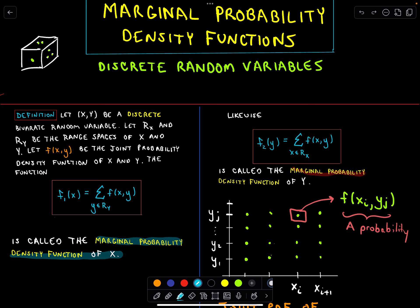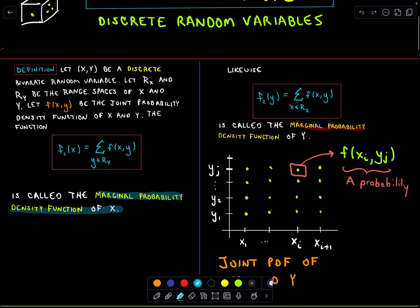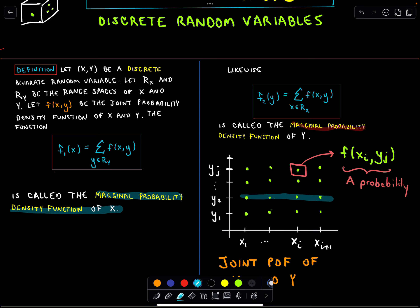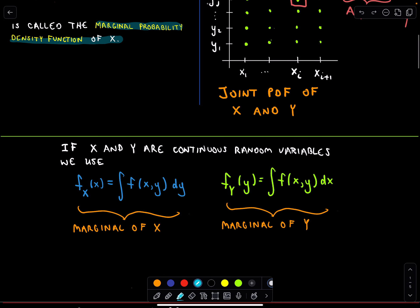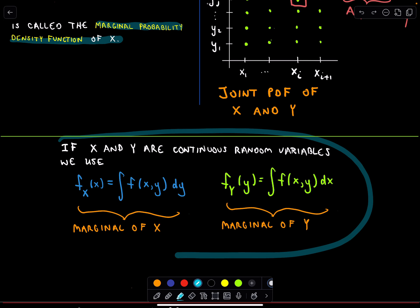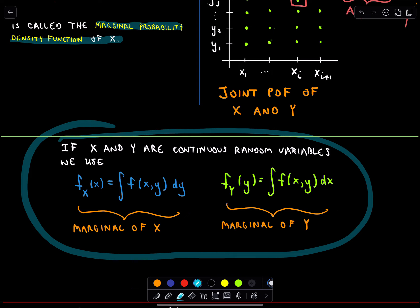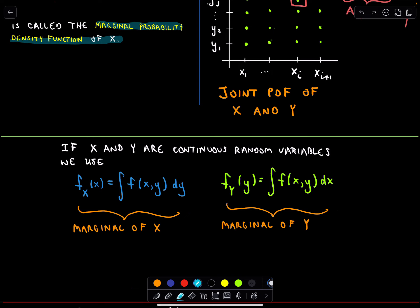When you compute these marginal density functions, what you're basically doing is summing up the probabilities along one of the columns or one of the rows of that joint PDF. And likewise, there's an analogous definition using integration if you happen to have continuous random variables.